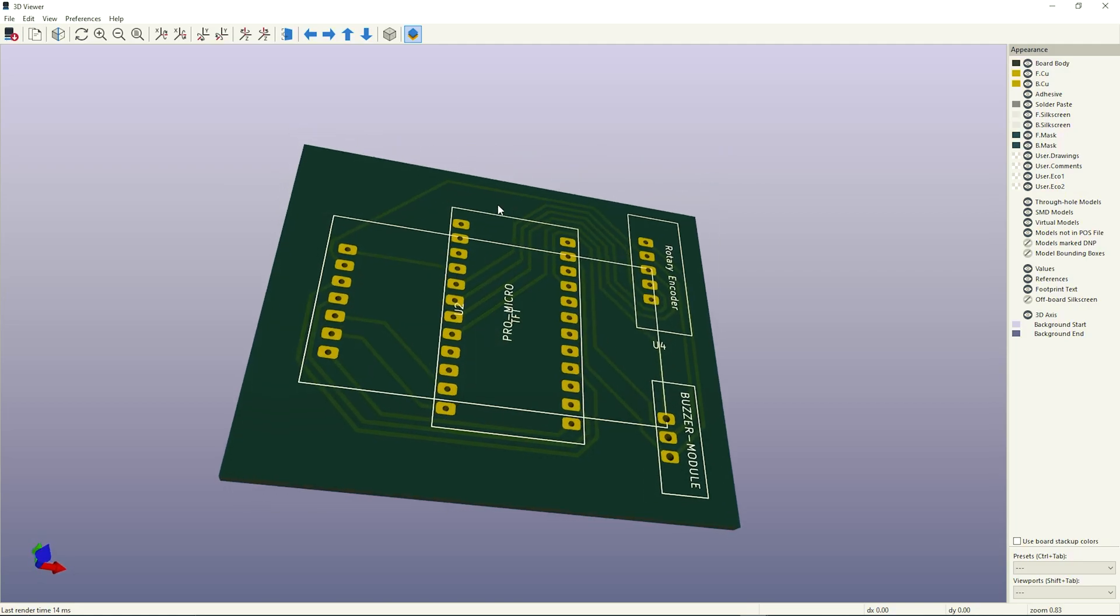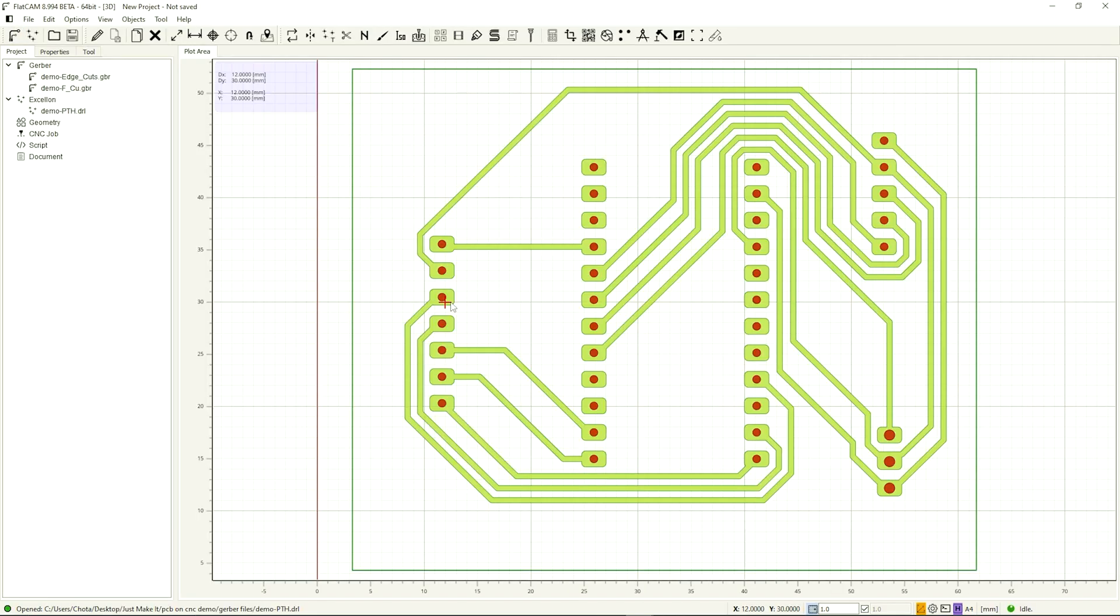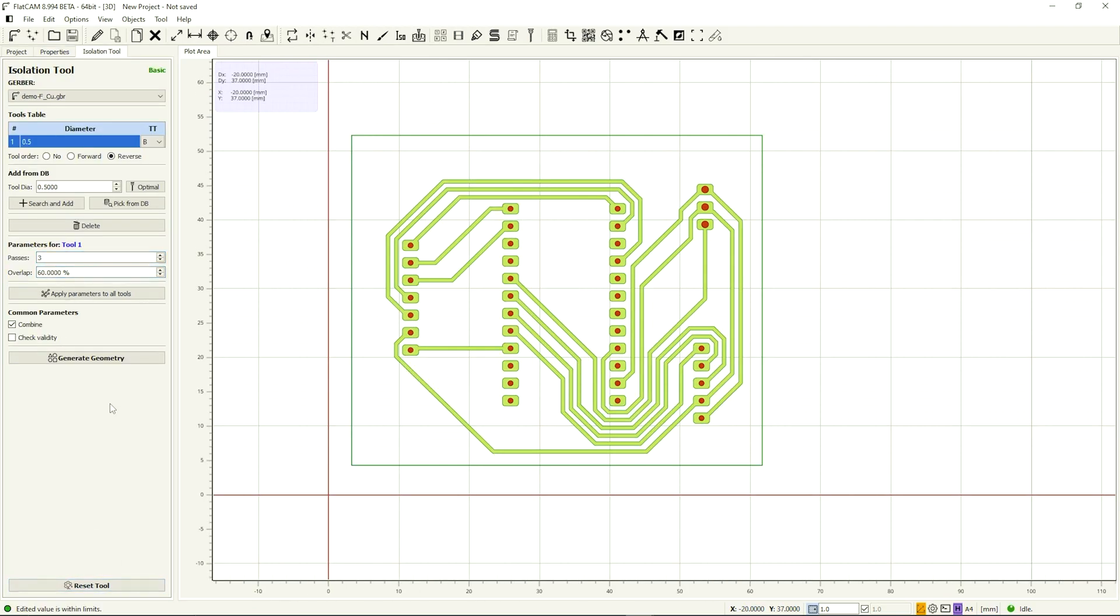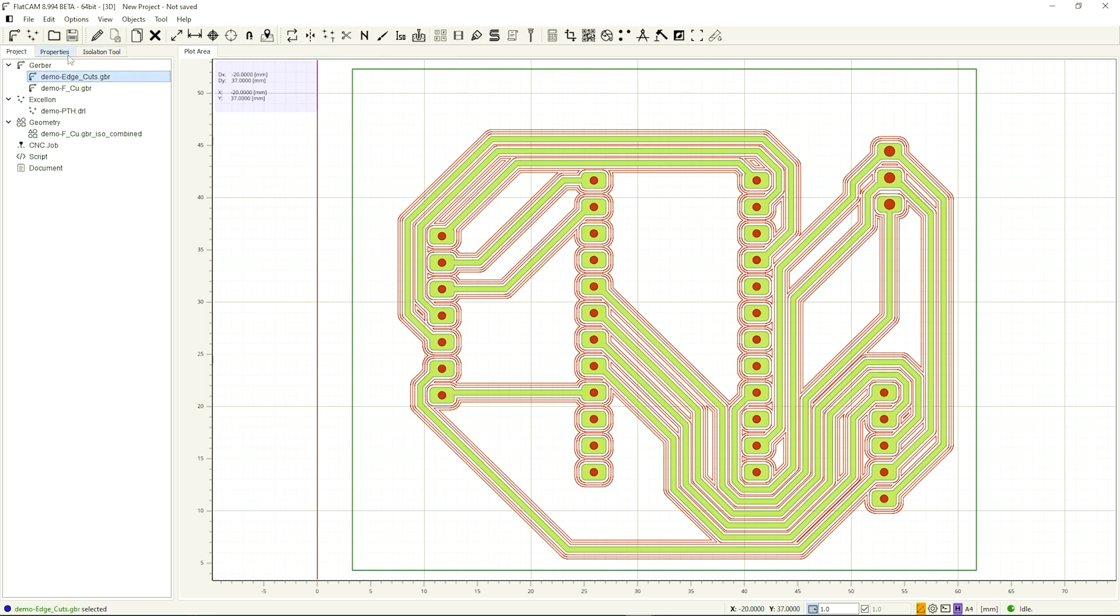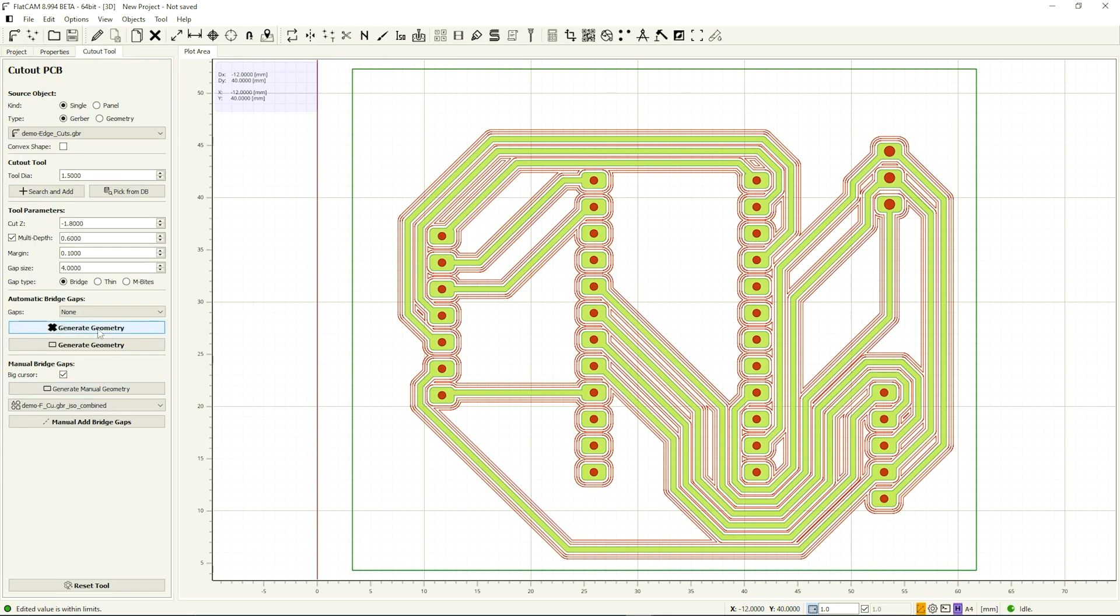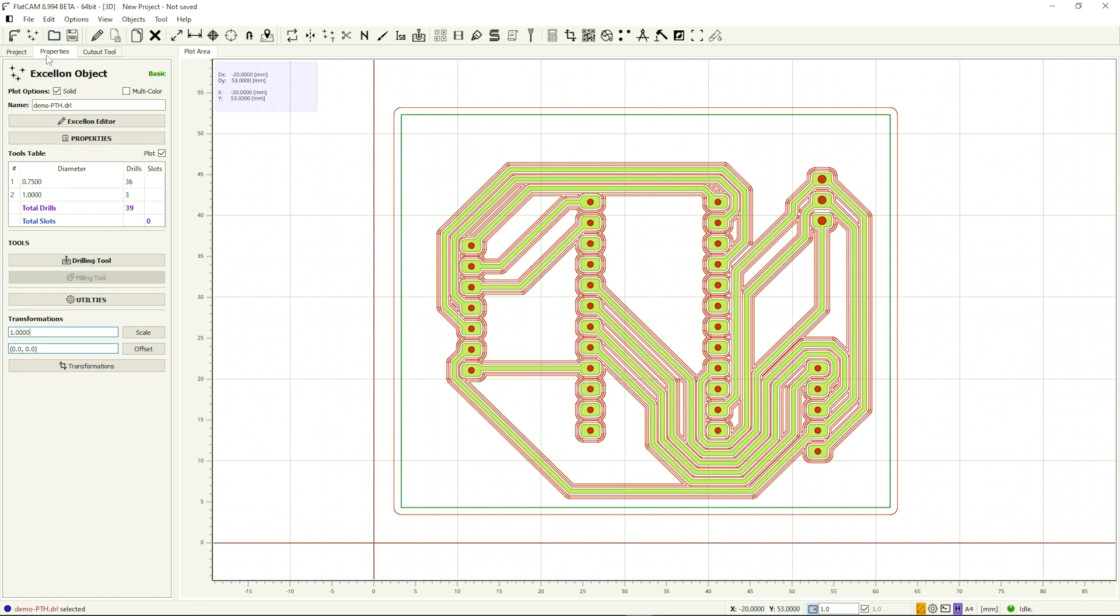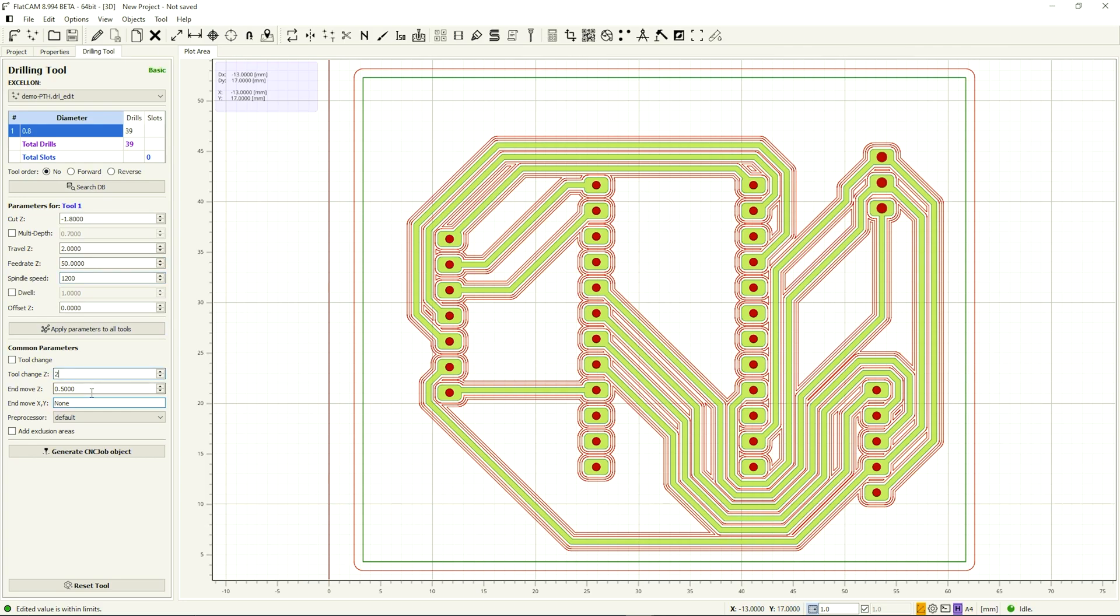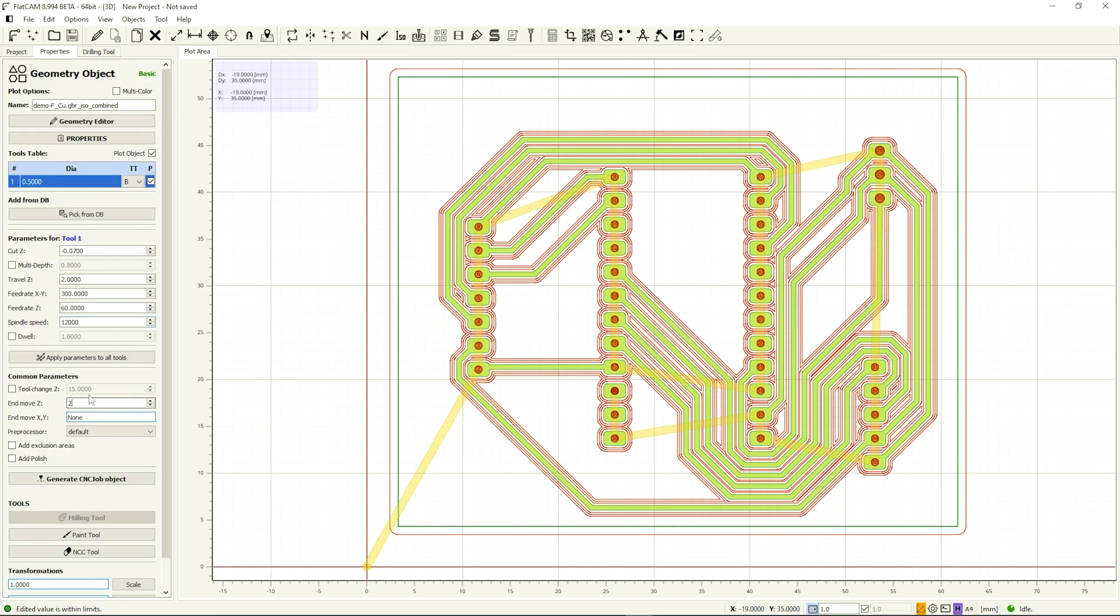The software we use to generate the G-code is called FlatCAM and I'll leave a link to it in the description below. To be honest with you guys, in this software there are a lot of different settings to configure. Basically you have to provide the tool type you're going to be using, the size of your CNC end mill, the feed rate, the spindle speed, and a whole host of other settings. A lot of trial and error went into this part, but I was eventually able to get settings that worked well with my CNC and the bits I was using.